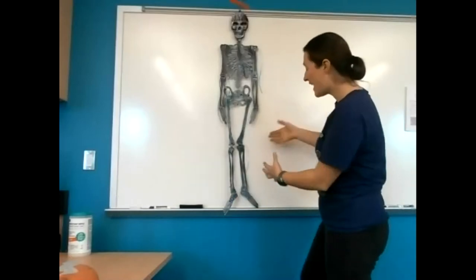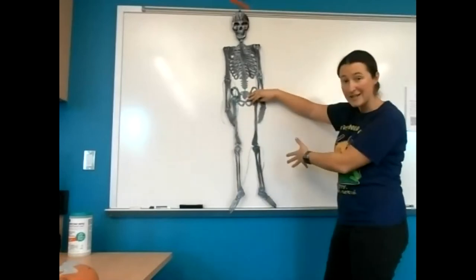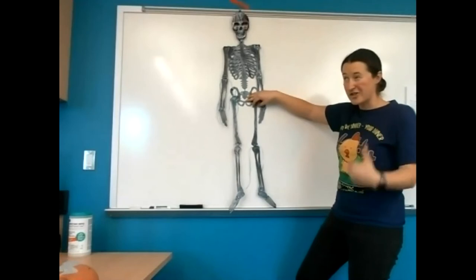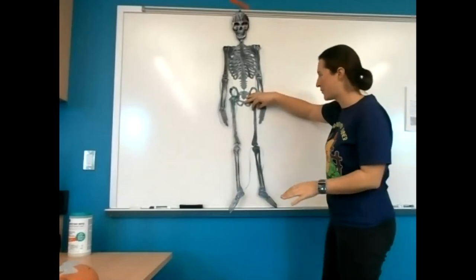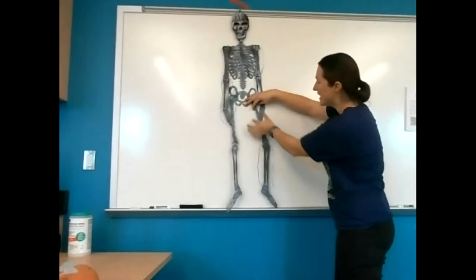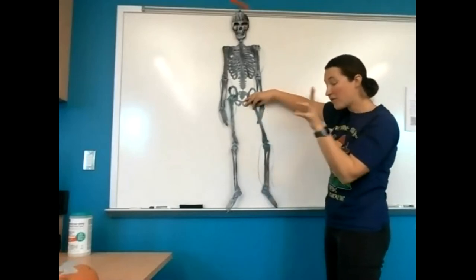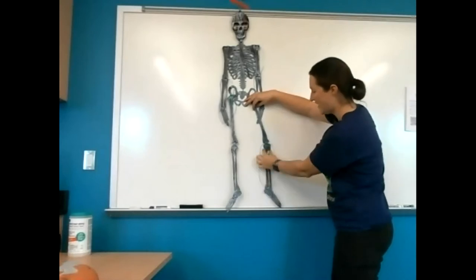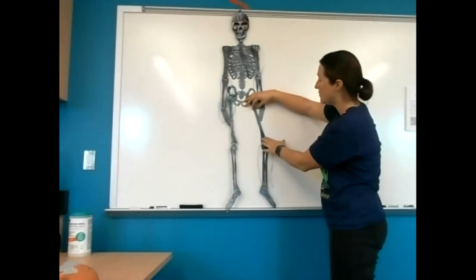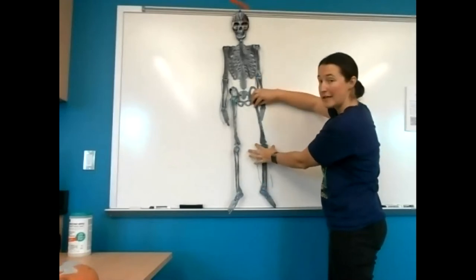Today we are going to be looking at the leg. The chicken leg looks different to us, but it is shockingly similar. The thigh bone is the femur, and the drumstick is the calf — the tibia and the fibula. We are going to be looking at the hip joint as well as the knee joint.